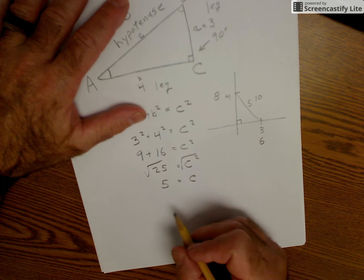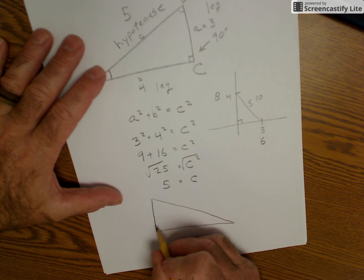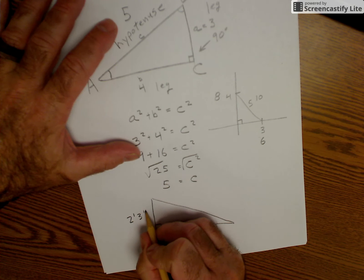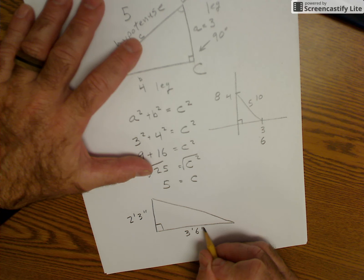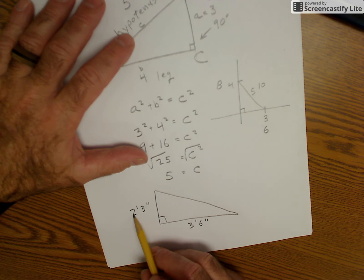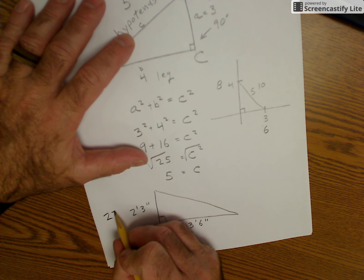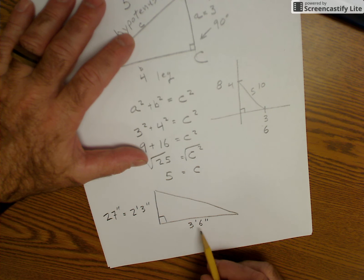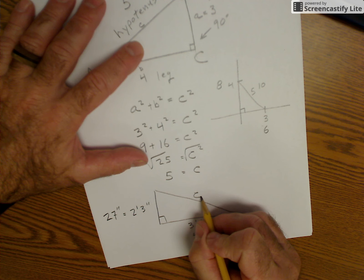If you have something a little difficult that doesn't work out, let's say this is 2 foot 3 inches, and this is 3 foot 6 inches. I convert everything into inches. So this is 2 times 12, 24, 25, 26, 27. So this is a total of 27 inches. 36 plus 6, 42 inches. And if I want to find this hypotenuse, I do 27 squared plus 42 squared equals c squared.